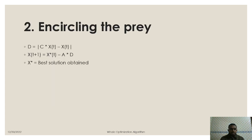So in the next we will see encircling the prey. Here we have to calculate the distance vector and here x* is the best solution obtained, and x is the current position and t is the number of iteration.